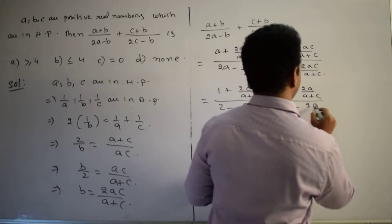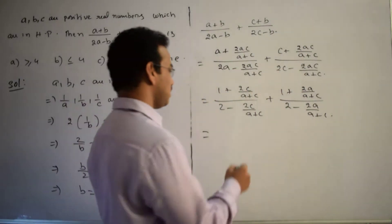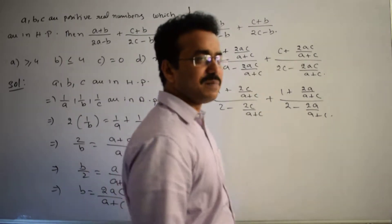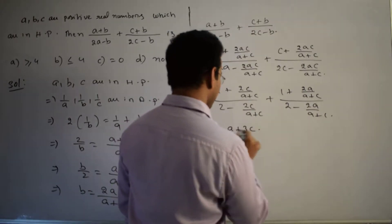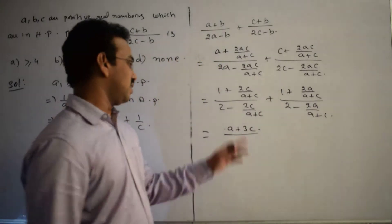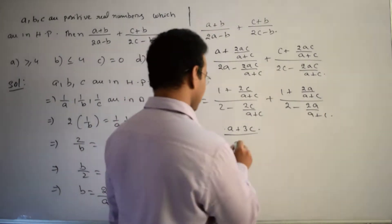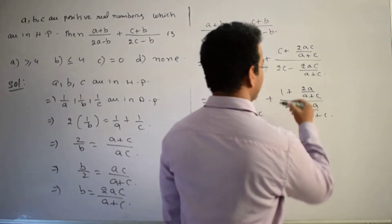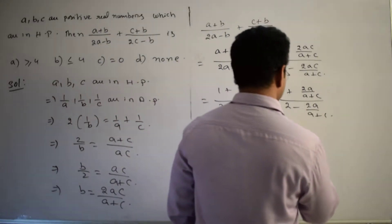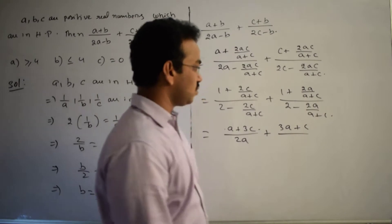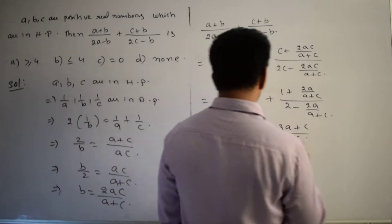After cancellation, the second term becomes [1 + 2A/(A+C)] / [2 - 2A/(A+C)]. Taking the common denominator (A+C), the first numerator becomes A + 3C and the denominator becomes 2A. For the second term, numerator becomes 3A + C and denominator becomes 2C.